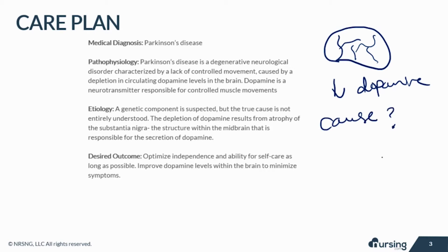That depletion of dopamine happens because of the atrophy of the substantia nigra, which is the structure in the midbrain responsible for the secretion of dopamine.